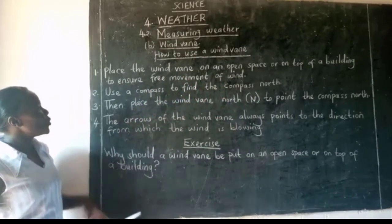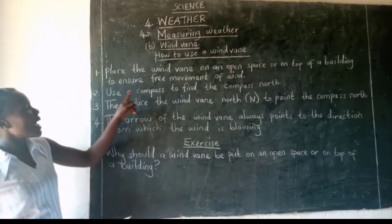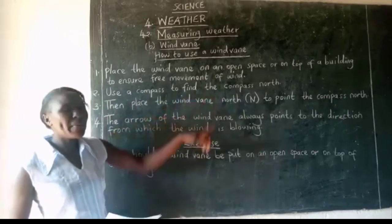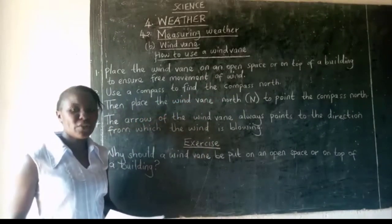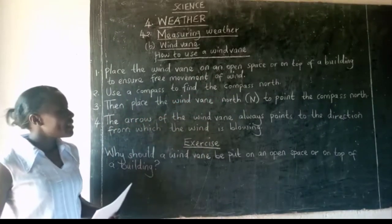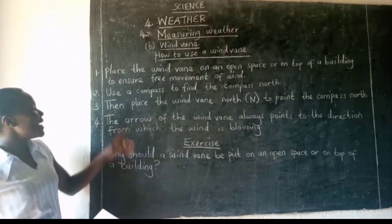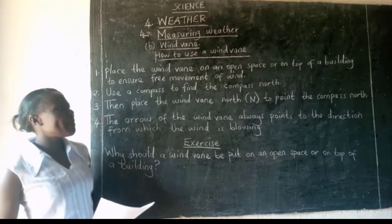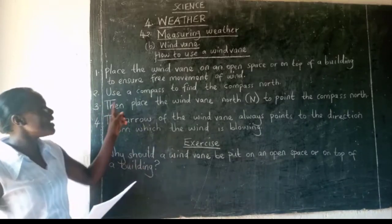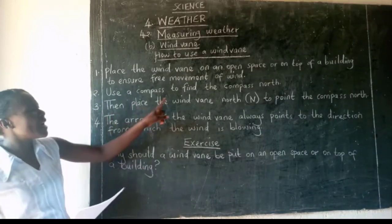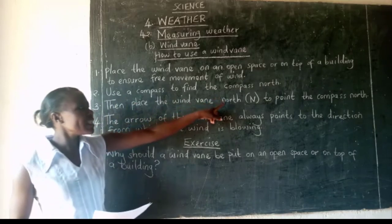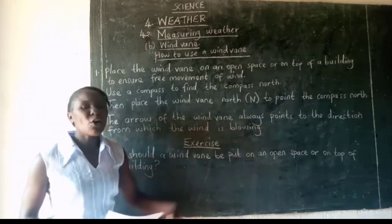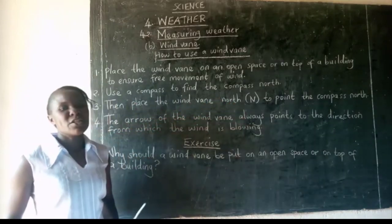Then number two: use a compass to find the compass north. Then number three: after using a compass, place the wind vane north to point to compass north.